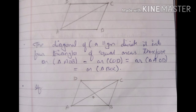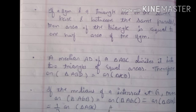In parallelogram ABCD, we have four triangles — AOB, AOC, AOD, and BOC — and they are all equal in area. If a parallelogram and a triangle are on the same base and between the same parallels, then the area of the triangle equals one half the area of the parallelogram.